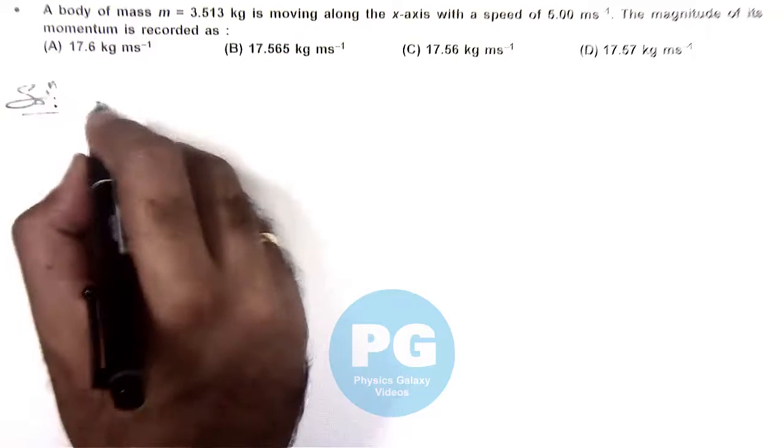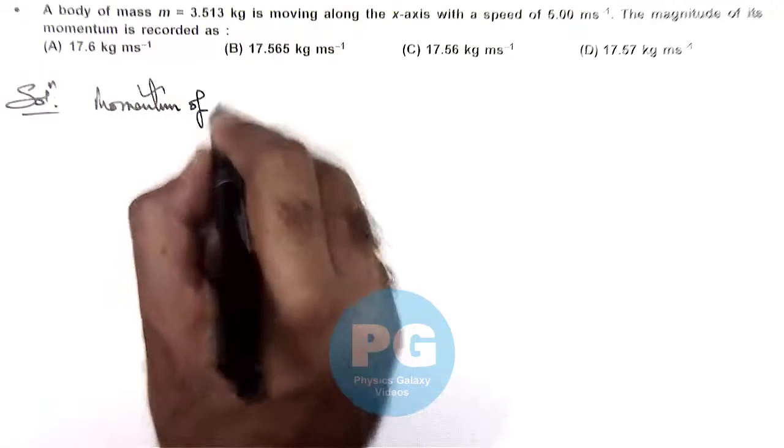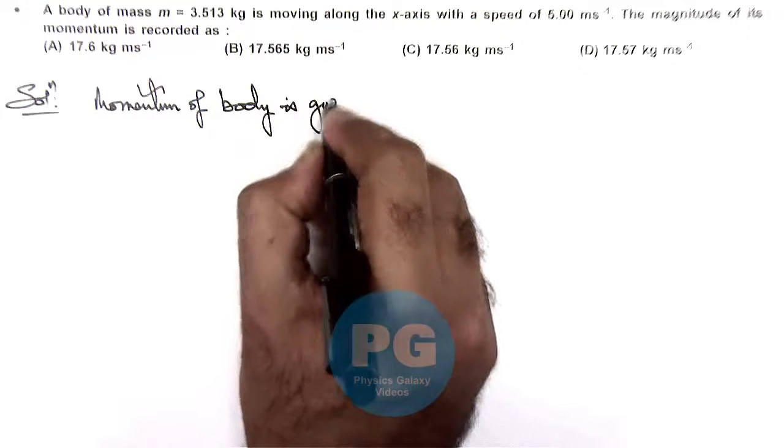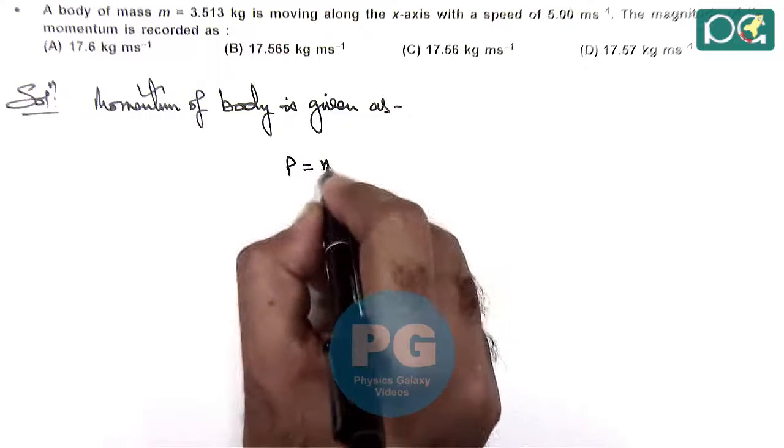So here we know momentum of a body is given as, here we write momentum as mv.